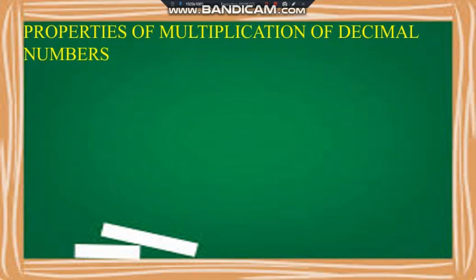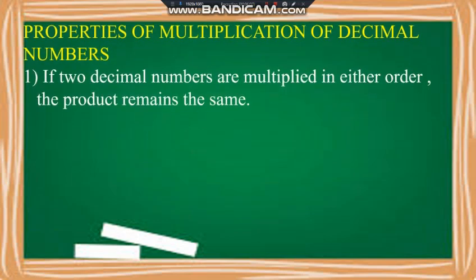Now, properties of multiplication of decimal numbers. If two decimal numbers are multiplied in either order, the product remains the same. For example, 0.3 into 0.4 equals 0.12, which is equal to 0.4 into 0.3. This commutative rule of multiplication applies to decimal numbers also.